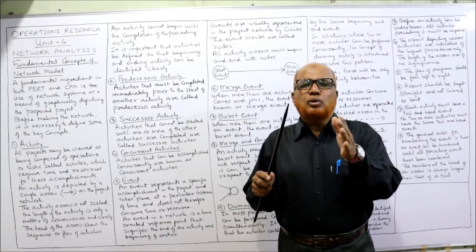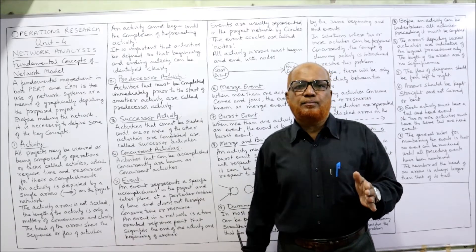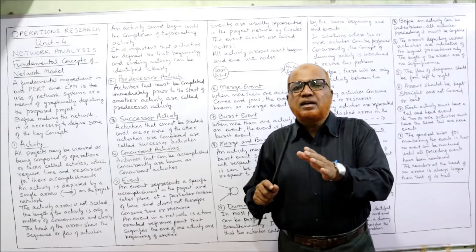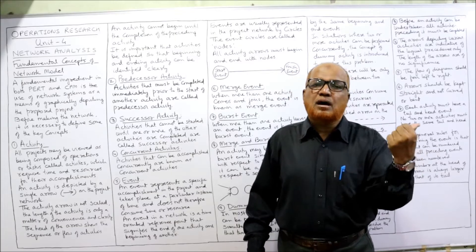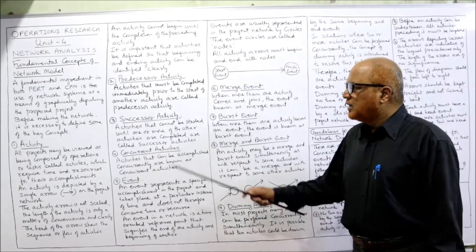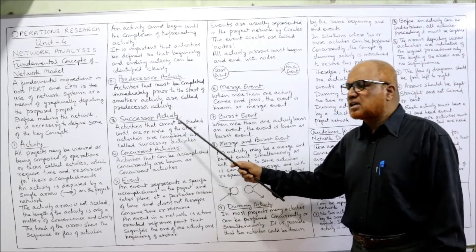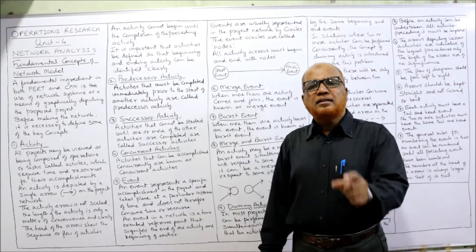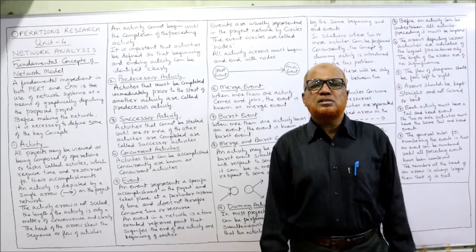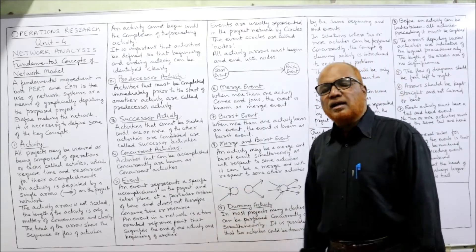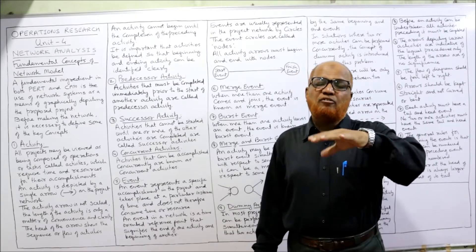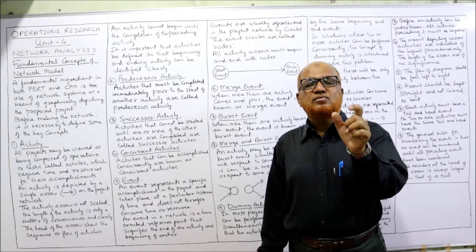Activities are classified into two categories: predecessor activity and successor activity. Predecessor activities are those which should be done first before starting the next activity — for example, activity A should be done first, and then only activity B can be done. Successor activities are those that cannot be started until one or more other activities are completed. Concurrent activities are two or more activities that can be done simultaneously.